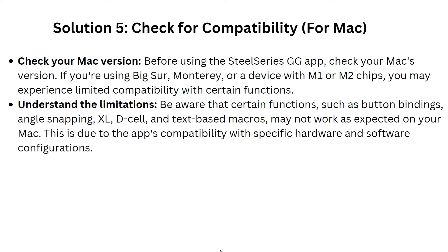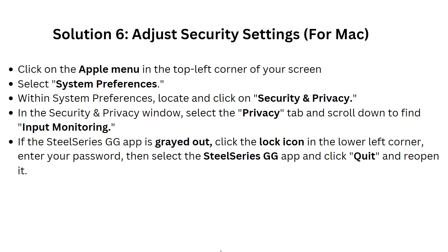In solution six, we have to adjust security settings on Mac. Click on the Apple menu in the top left corner of the screen and select System Preferences. Within System Preferences, locate and click on Security and Privacy. Go to the Privacy tab, scroll to find Input Monitoring. If SteelSeries GG is grayed out, click the lock icon in the lower left corner, enter your password, enable SteelSeries GG, then click Quit and reopen the app.